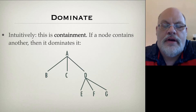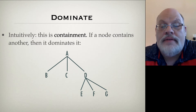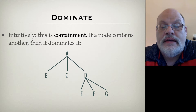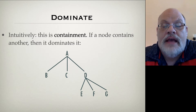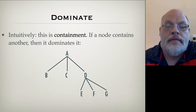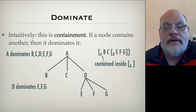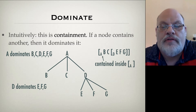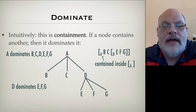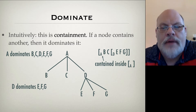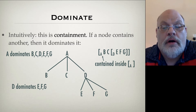If we look at this abstract tree here, we can see that A dominates B, C, and D, and it also dominates E, F, and G. A contains all of those nodes. It becomes a lot more clear if you look at a bracketed diagram for this same tree structure, and you'll see that the containment relationship is clearly indicated by the brackets, where B, C, D, E, F, and G are all contained within the brackets marked A.